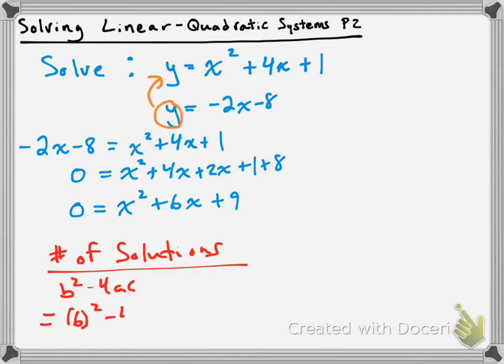So I'm going to substitute b, a, and c in here, so we get 6 squared minus 4 times 1 times 9, which gives us 36 minus 36, which gives us 0. So since we get a discriminant of 0, we're expecting there to be only one solution, and therefore one point of intersection.